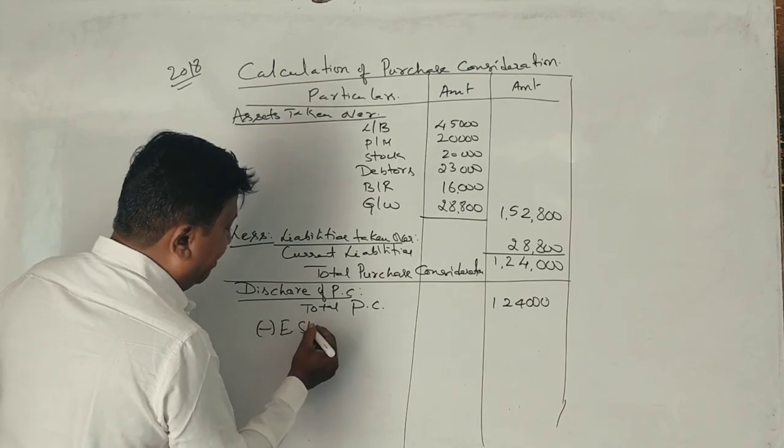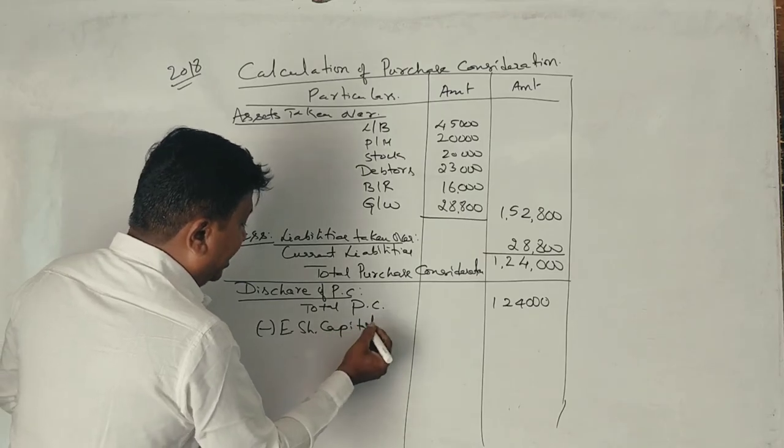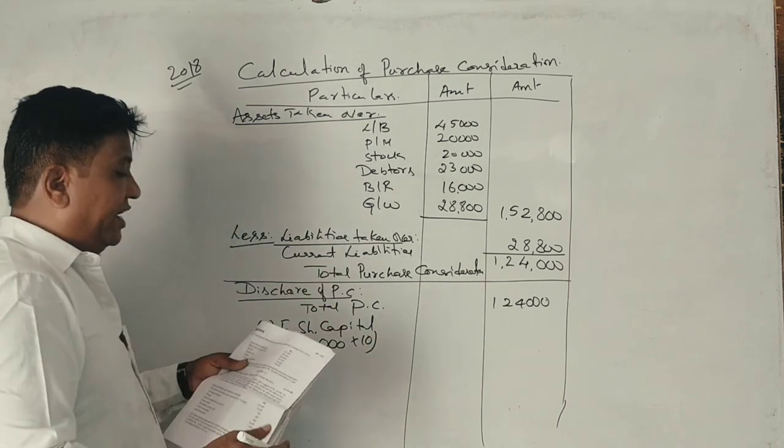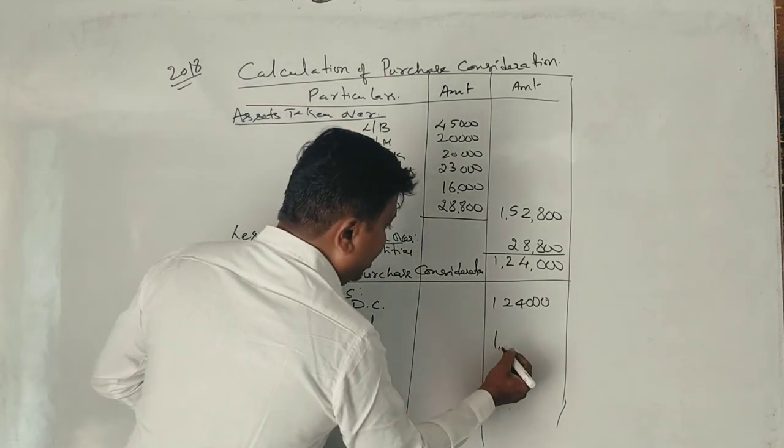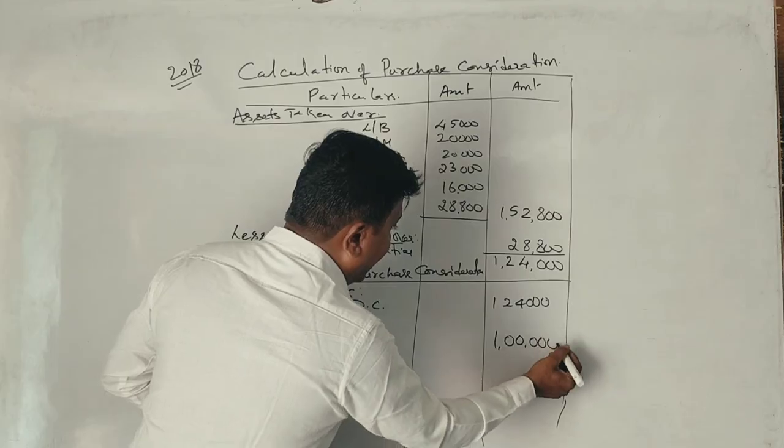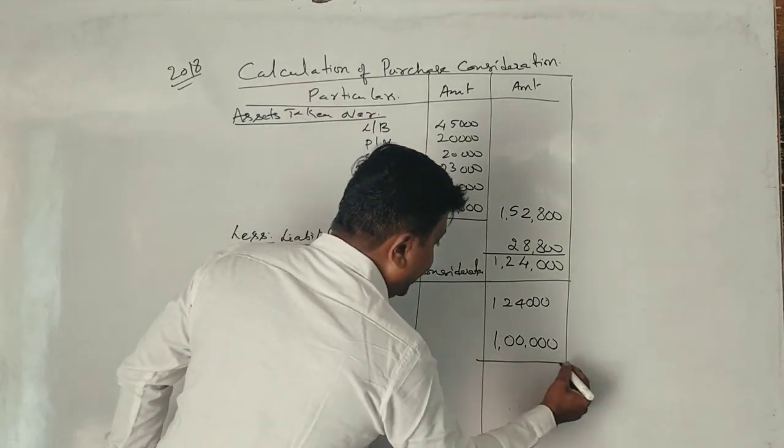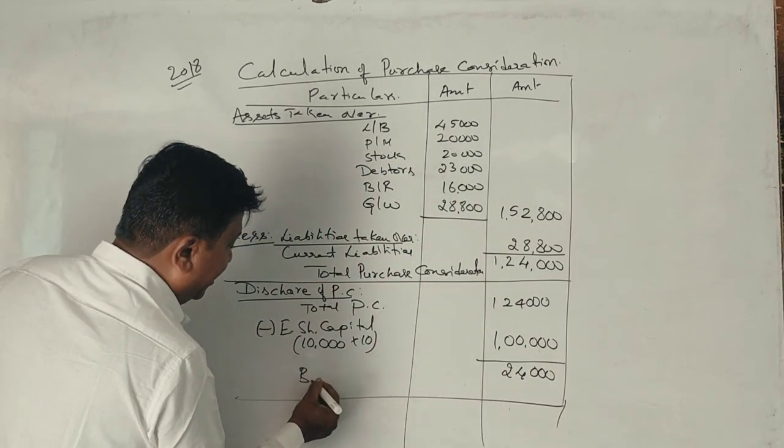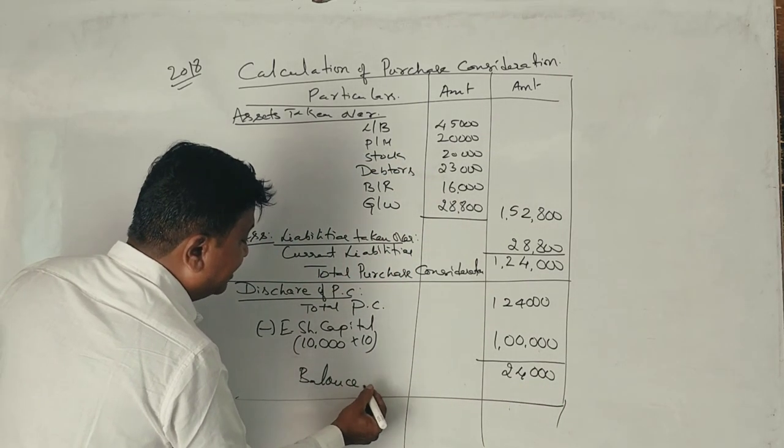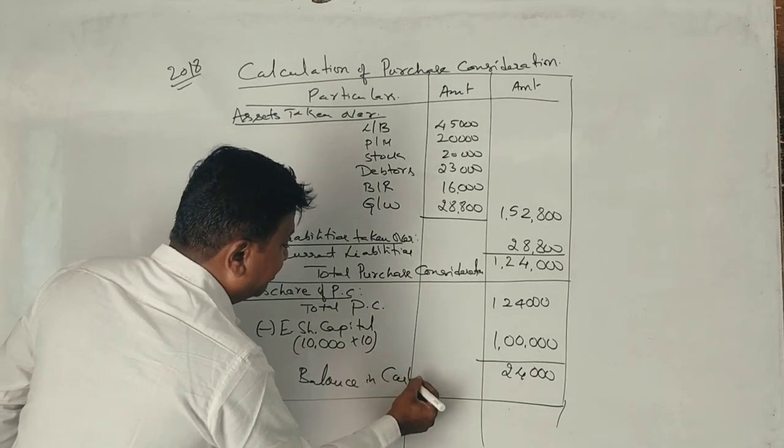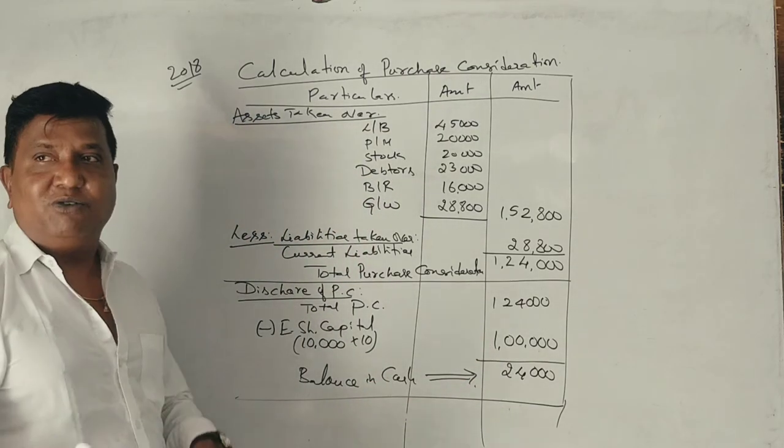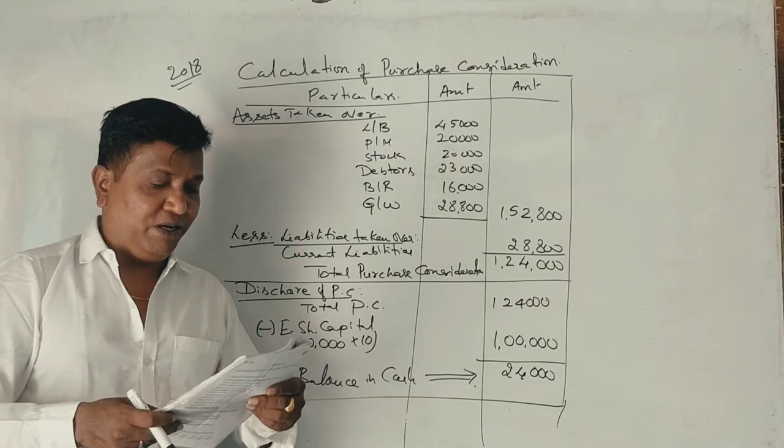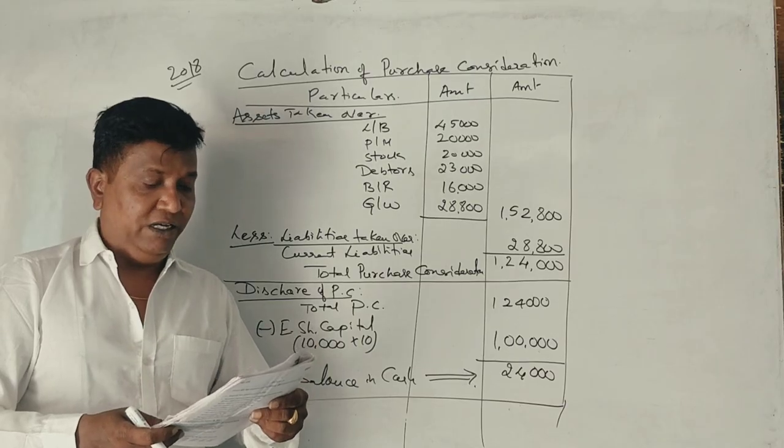Equity share capital. 10,000 equity shares, one share Rs. 10 each equals 1,00,000. Equity share capital. Balance in cash. This is the balance of cash, you can calculate. This is 8 marks or 6 marks question.